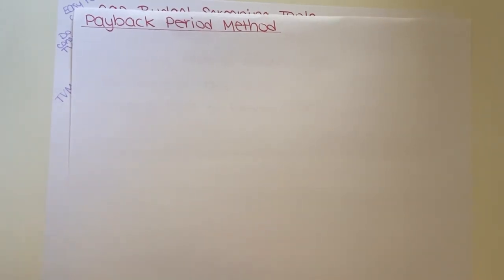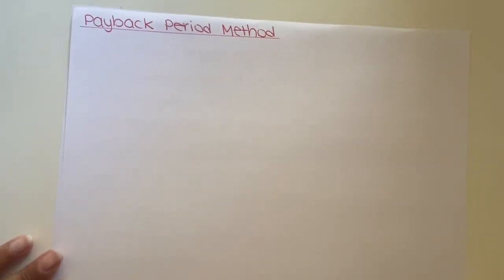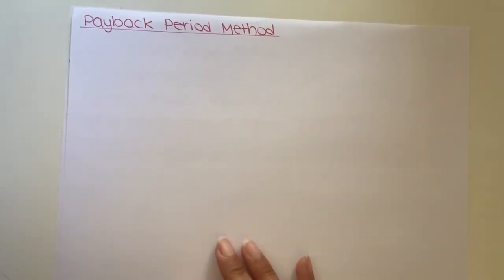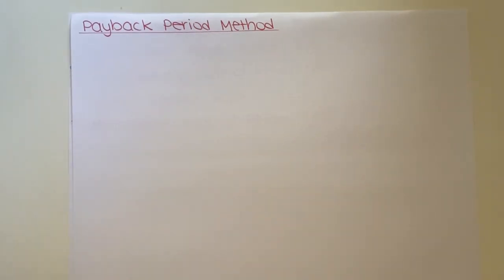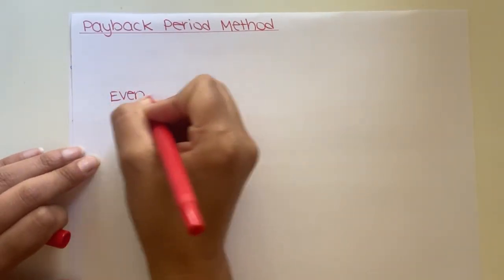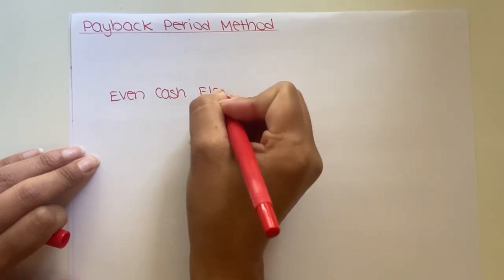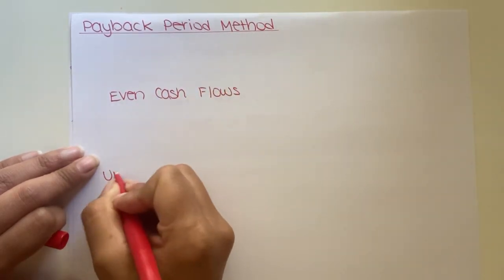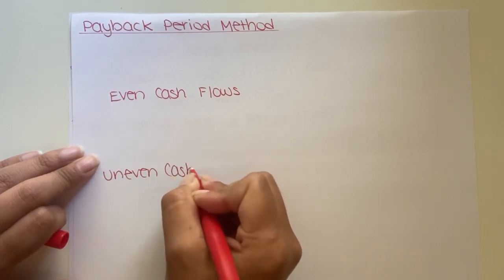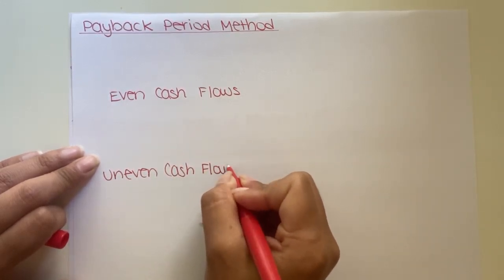There are two different formulas depending on whether the cash flows generated by the asset are even or uneven. If we have even cash flows, we use one formula. If we have uneven cash flows generated by the capital asset, we use a different format.